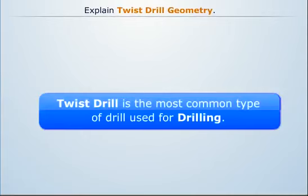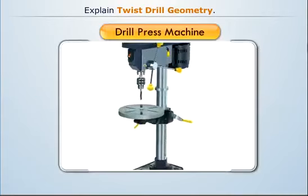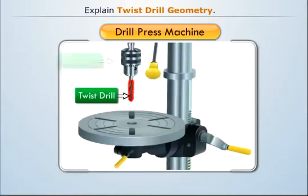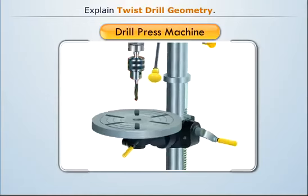Twist drill is the most common type of drill used for drilling. In any drilling operation, the twist drill is fixed by a drill chuck which is attached to the drill press.